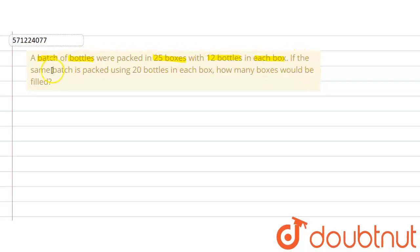If the same batch, same batch means the total number of bottles are same, is packed using 20 bottles in each box. This time if 20 bottles are kept in each box, how many boxes would be filled?